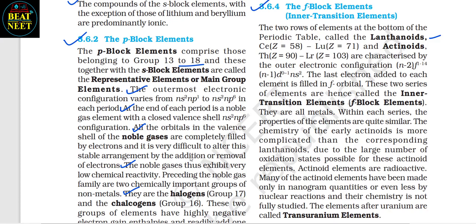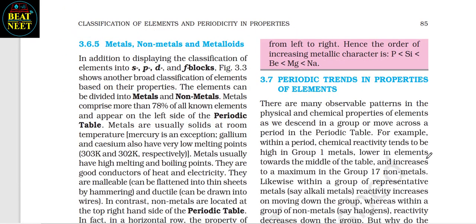3.6.4 The f Block Elements — Inner Transition Elements. The two rows at the bottom of the periodic table are the lanthanoids (Ce, Z=58 to Lu, Z=71) and the actinoids (Th, Z=90 to Lr, Z=103), characterized by the outer electronic configuration (n−2)f¹⁻¹⁴ (n−1)d⁰⁻¹ ns². The last electron added is filled in an f orbital. They are all metals; within each series, properties are quite similar. The chemistry of early actinoids is more complicated than the corresponding lanthanoids due to the large number of oxidation states possible. Actinoid elements are radioactive; many have been made only in nanogram quantities by nuclear reactions. The elements after uranium are called transuranic elements.